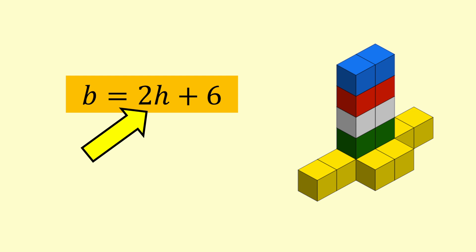The 2 in the equation is called the coefficient of h, and tells us how much the number of blocks goes up for each increase of 1 in the height.